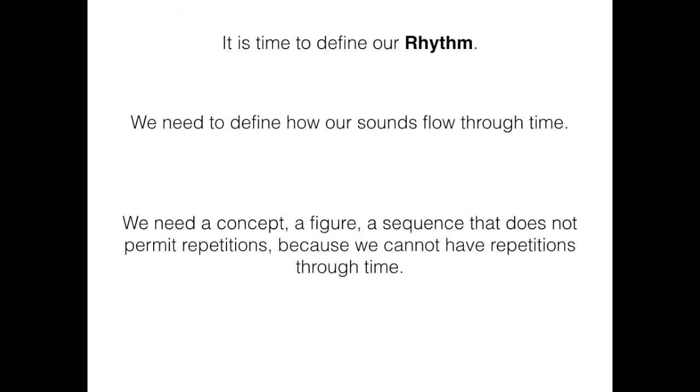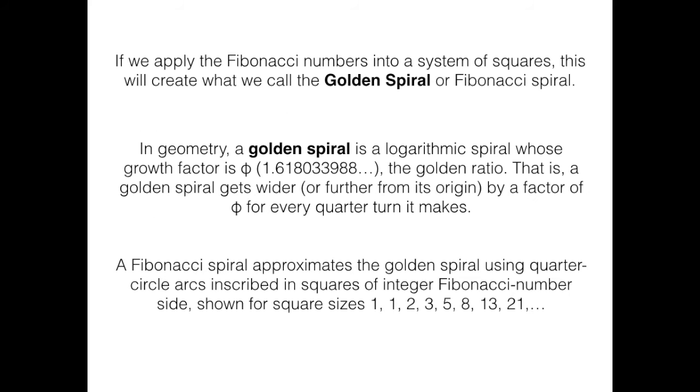It is time to define our rhythm. We need to define how our sounds flow through time. We need a concept, a figure, a sequence that does not permit repetitions, because we cannot have repetitions through time. If we apply the Fibonacci numbers into a system of squares, this will create what we call the golden spiral, or Fibonacci spiral. A Fibonacci spiral approximates the golden spiral using quarter circle arcs inscribed in squares of the integral Fibonacci number side.